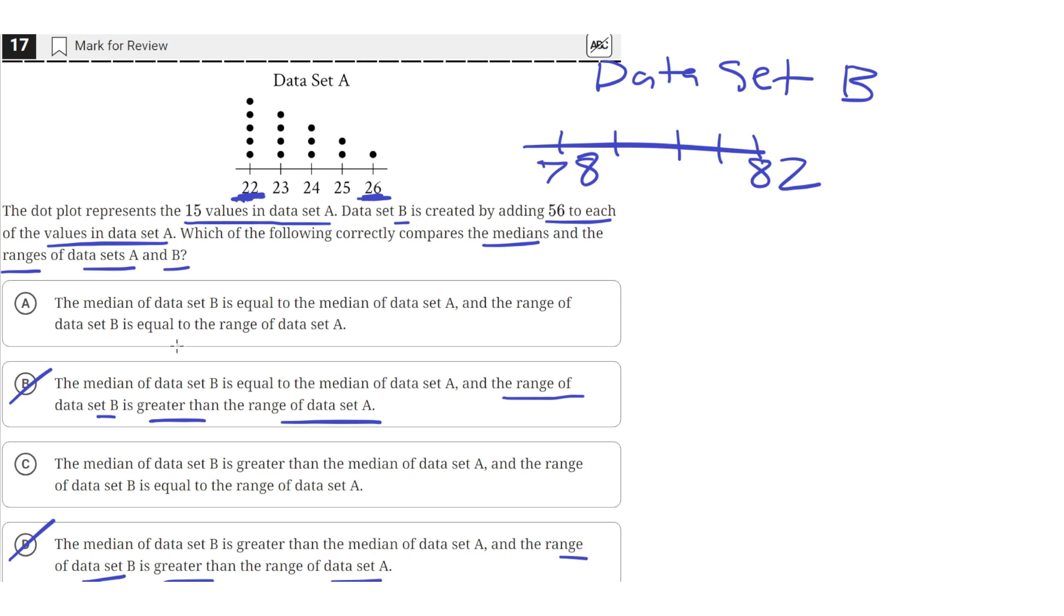So answer choice A says the median of data set B is equal to the median of data set A, so that's wrong. But answer choice C says the median of data set B is greater than the median of data set A, so that's correct. Because the median is larger, but the range is still the same. So C is the correct answer.